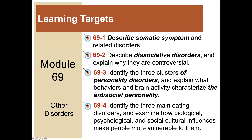There are four learning targets for this module: to describe somatic symptom and related disorders; describe dissociative disorders and explain why they are controversial; identify the three clusters of personality disorders and explain what behaviors and brain activity characterize antisocial personality; and identify the three main eating disorders and examine how biological, psychological, and sociocultural influences make people more vulnerable to them.